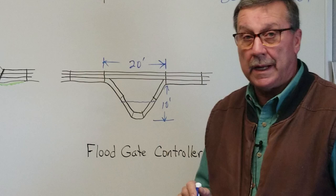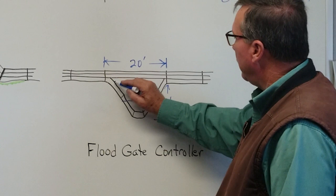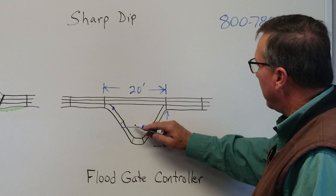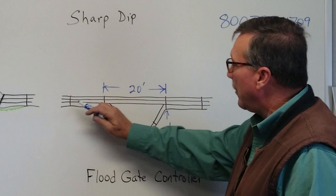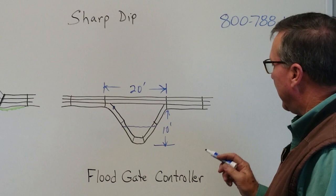So there is an accessory called a floodgate controller that you can put in your fence. And when that water comes up, it'll actually cut the energy off of this wire right here, but it will not affect the rest of your fence. So it's a neat accessory.